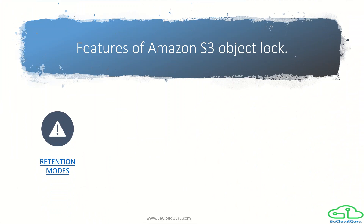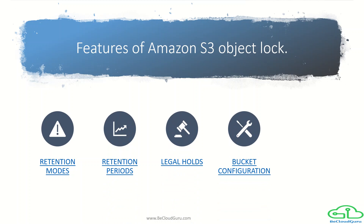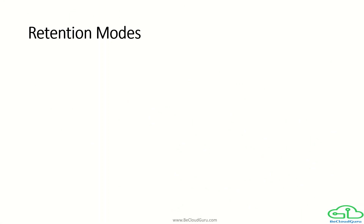Now let's see what are the features of Amazon S3 Object Lock. The first one is retention mode. There are also retention periods, legal holds, bucket configuration, and required permissions. These are the features which together make Object Lock work.